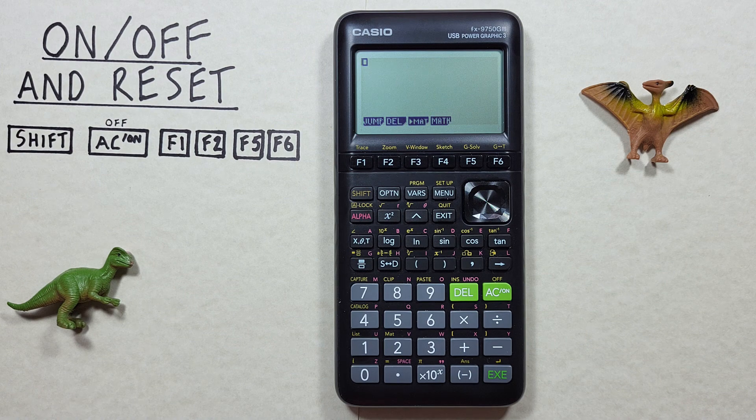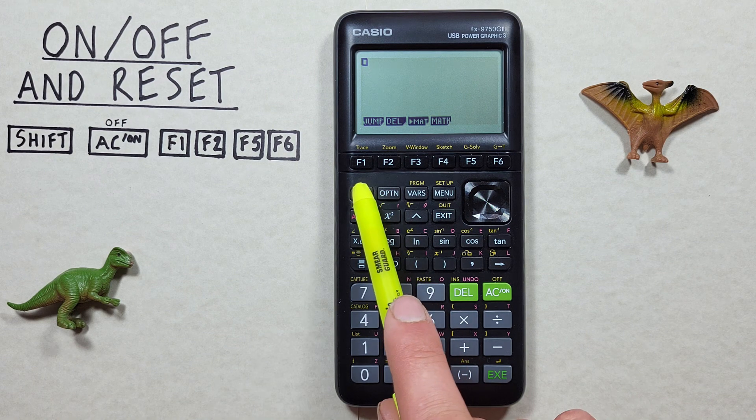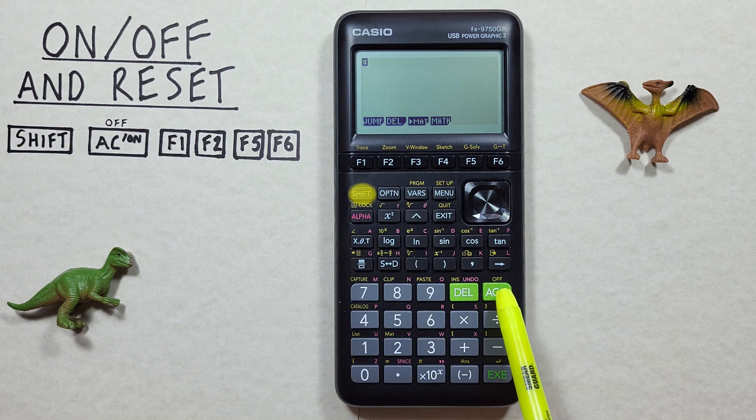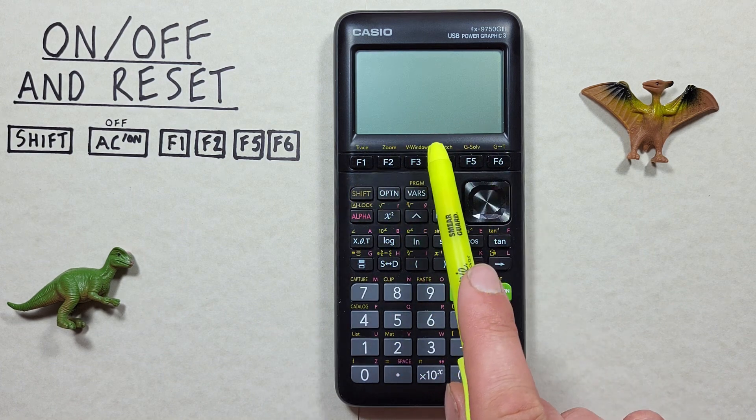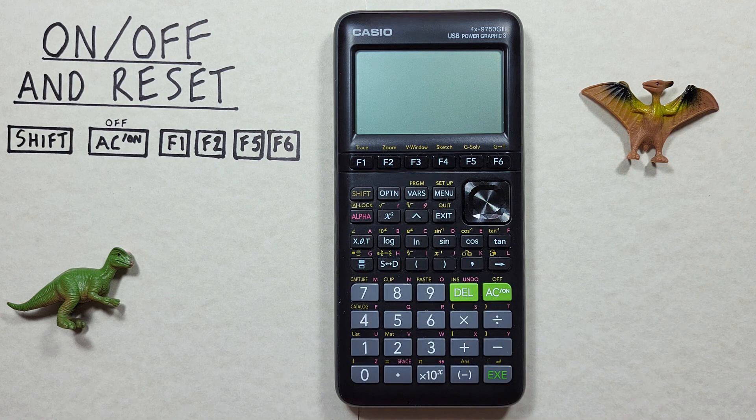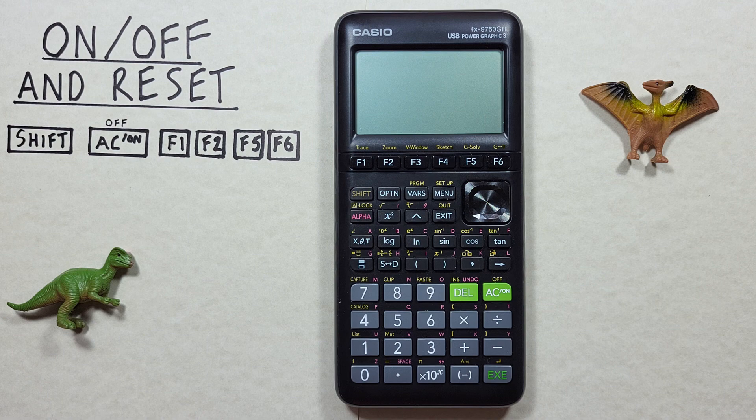If we're done working with our calculator and want to turn it off to save batteries, what we do is press shift and then the on key. That'll give us that Casio screen and then turn off. We're now saving our battery power so that we don't accidentally run out in the middle of our exam.